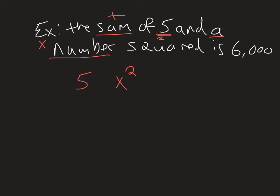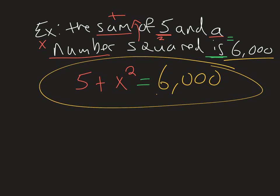That is part of my sum. So 5 plus x squared is - in mathematics, that's a dead giveaway, that's where the equal sign goes. Equals, and then 6,000 is just 6,000. That would be an equation for our example here.